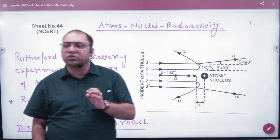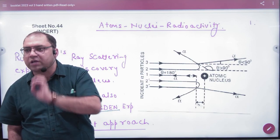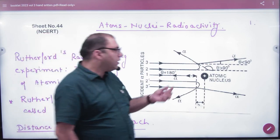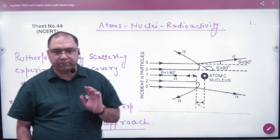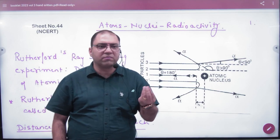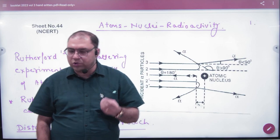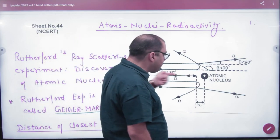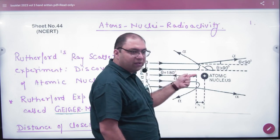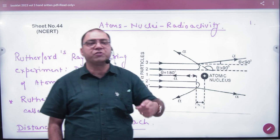Alpha particles charge plus 2E. Alpha particles are positively charged particles and the nucleus charge is ZE. ZE because there are Z number of protons. So nucleus is positively charged particles. Nucleus positive and alpha particles positive, the positive positive will not be able to collide because positive will repel.